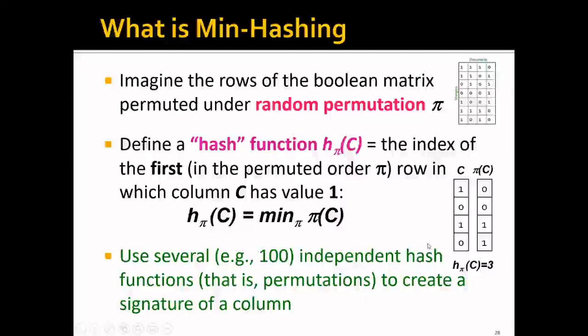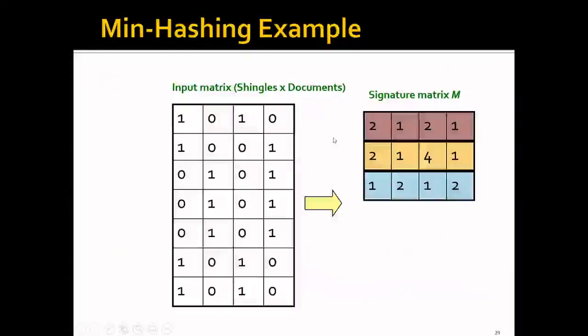Therefore, the hash value for this hash function is actually three. And of course, we can use several independent hash functions to create a longer signature of a column. For example, if we use three independent hash functions, then we can basically compress the column of length seven to another column of length three. Basically, we are going to be able to have a signature matrix of three by four.